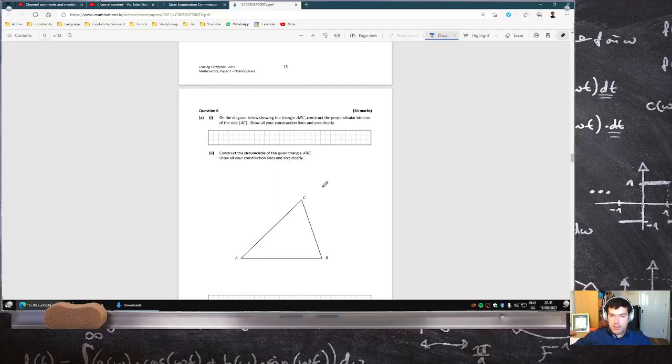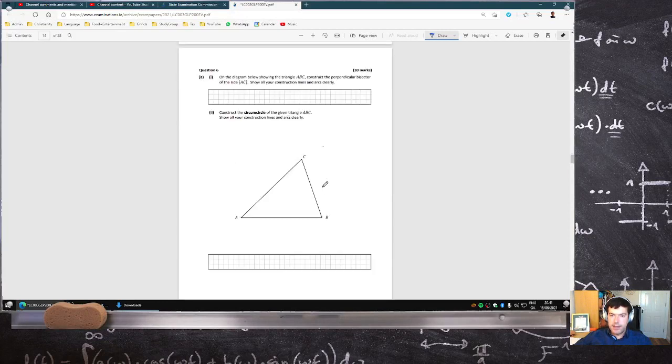On the diagram below, construct a perpendicular bisector of AC. So I think you know what to do. You put your compass point here, you make an arc on the other side, arc there and there.